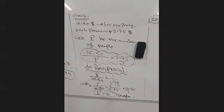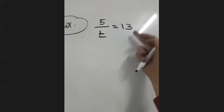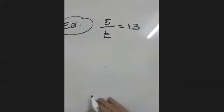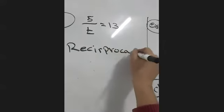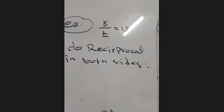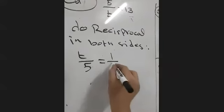Here is an extra example about this idea. We have 5 over T equals 13. The variable T is in the denominator, so we do reciprocal first on both sides. Five over T becomes T over 5 on the left. The 13 is over 1, so we flip it to get 1 over 13 on the right.